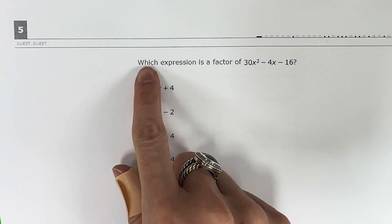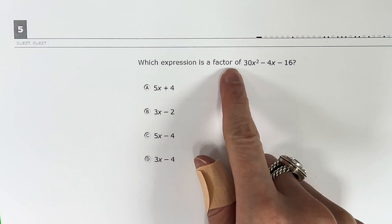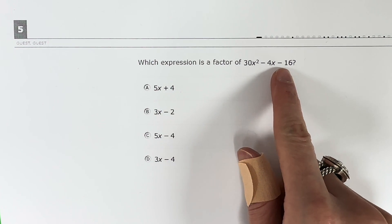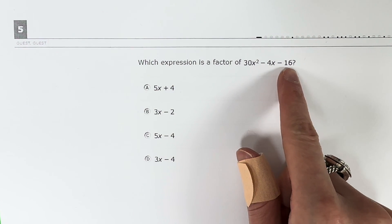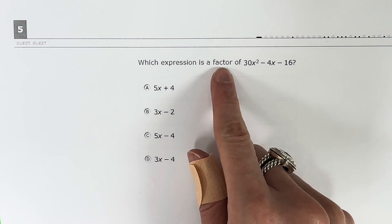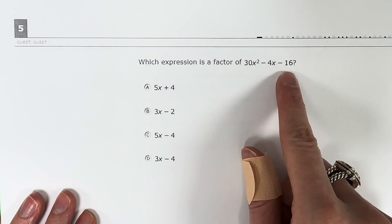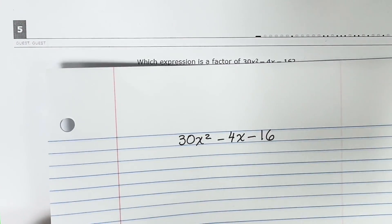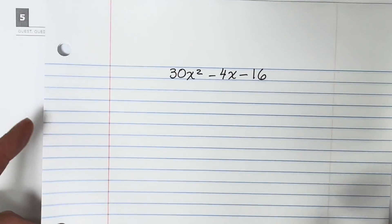Question 5. Which expression is a factor of 30x squared minus 4x minus 16? The key word here is factor, so let's go ahead and factor this trinomial. I went ahead and copied it on a piece of paper.